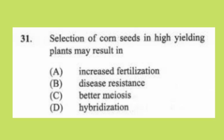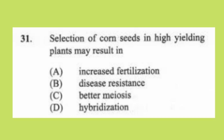Question 31: Selection of corn seeds from high-yielding plants may result in (a) increased fertilization, (b) disease resistance, (c) better meiosis, (d) hybridization. The best answer is D, hybridization. A hybridized plant will incorporate the characteristics listed in options A, B, and C. Hybridization produces a genotype that is not a purebred — a mixed-gene plant that is very vigorous and productive.